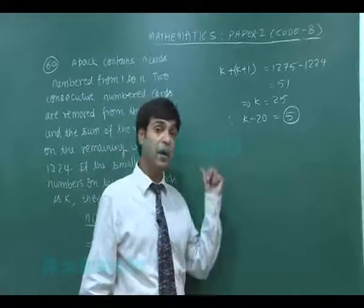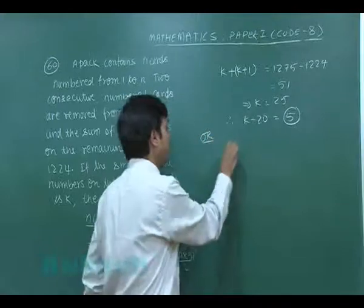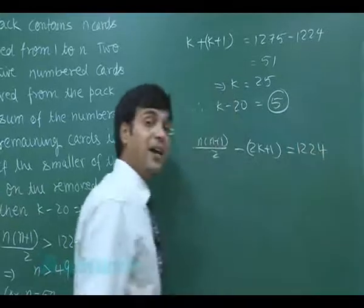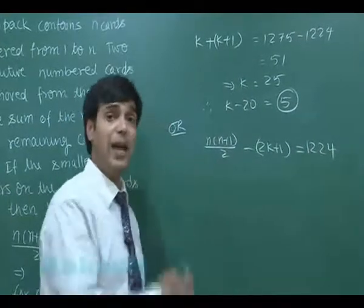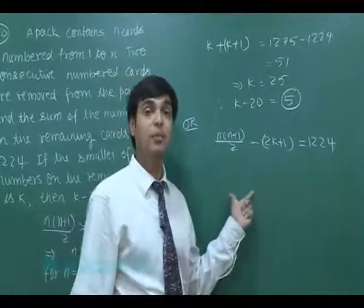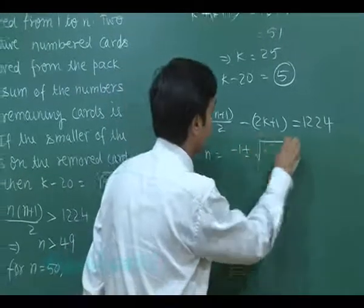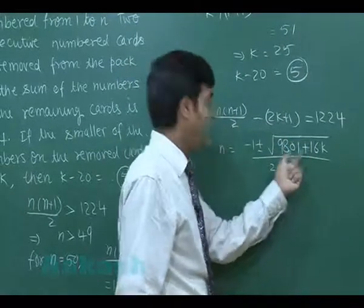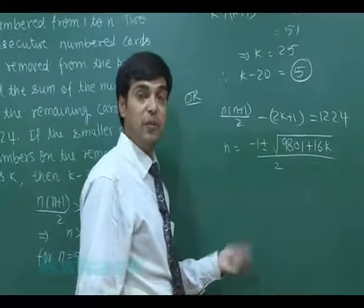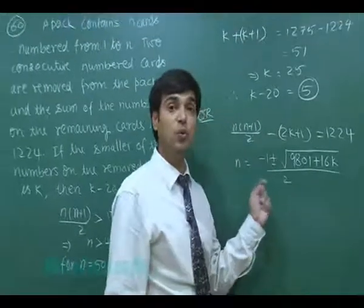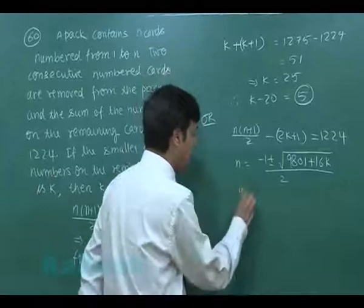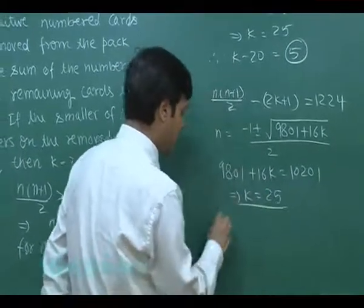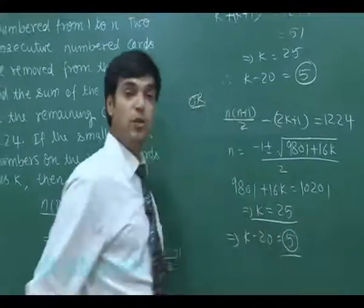Alternatively, we could write n*(n+1)/2 minus (2k+1) = 1224, creating a quadratic in n. Solving for n, the square root term contains 9801 + 16k, which must be an odd perfect square. The next odd perfect square after 9801 is 10201. Setting 9801 + 16k = 10201 gives k = 25 on simplification, so k minus 20 = 5. That concludes paper 1.